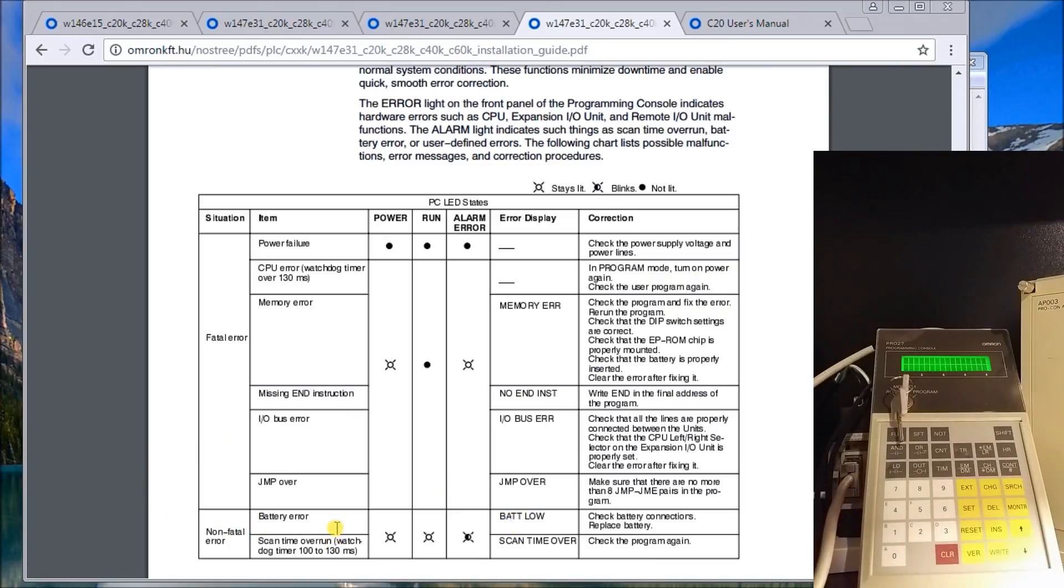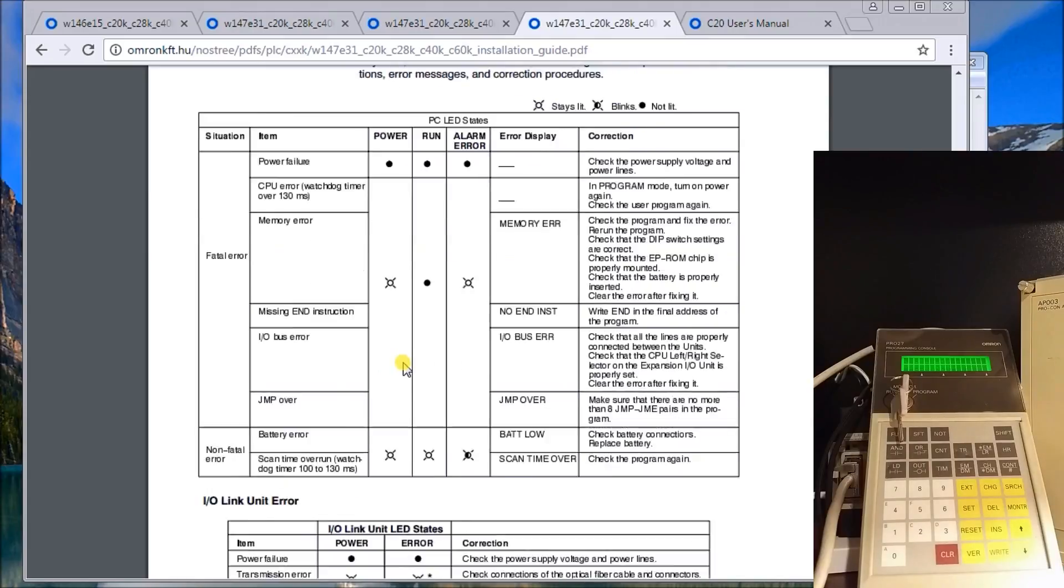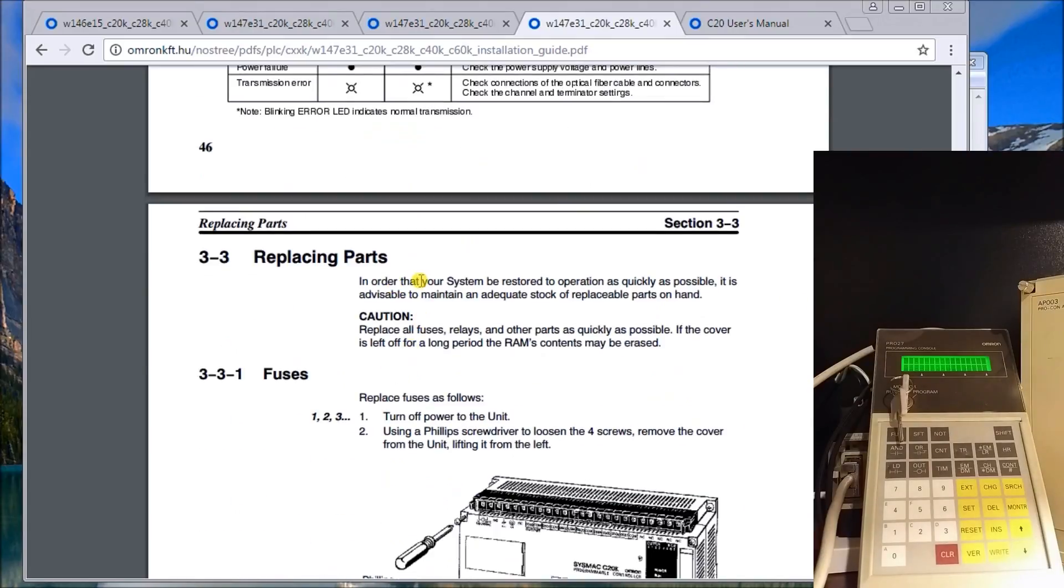Your non-fatal error is just when it detects that the battery error is there, also your scan time if it's overrun. But typically if it's been this long, it's not about your program. It's either about losing your memory itself. So that's what we'll concentrate.